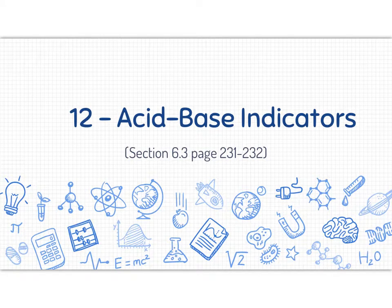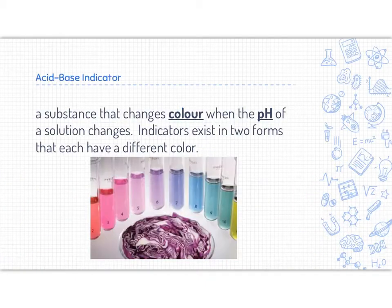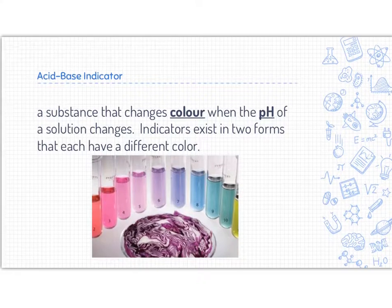So we're going to take a look at acid-base indicators here. This is section 6.3 in your textbook. An acid-base indicator is a substance that changes color when the pH of a solution changes. Indicators exist in two forms that each have a different color, if not actually more. Some indicators have multiple colors, and what we're looking at here is cabbage indicator showing different colors for different pH values.